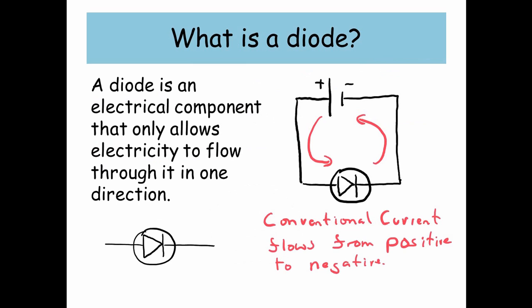So what is a diode? A diode is an electrical component that only allows electricity to flow through it in one direction. So a conventional current will flow from positive to negative, and if you look at the actual symbol of a diode, it has this kind of arrow pointing in the direction that it will allow conventional current to flow.